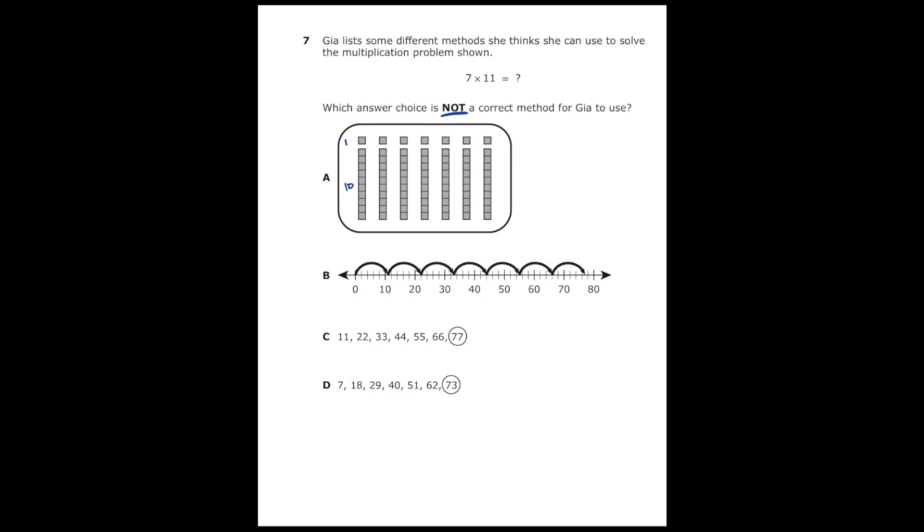So for letter A, they give us a bunch of blocks, and so in that first column, we have a set of 10 and then one by itself to make a total of 11. So we're going to see how many columns in total we have, and so we're going to have one, two, three, four, five, six, seven. So that one would work. That's seven times 11, but we want an answer choice that's not correct. So we're going to mark out letter A.